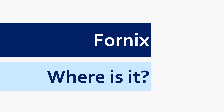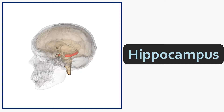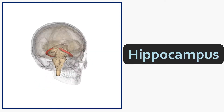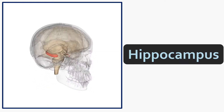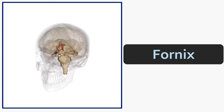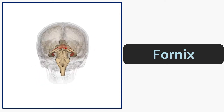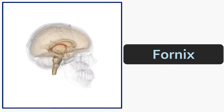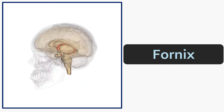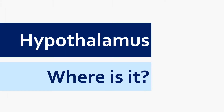We'll briefly mention the fornix, which is important for understanding how parts of the limbic system are connected. The hippocampus sweeps up and around the back of the brain and connects into the fornix. The fornix connects the hippocampus to the hypothalamus, which is a really important part of the limbic system and in many ways its main output — the amygdala and hippocampus are both strongly wired into the hypothalamus.